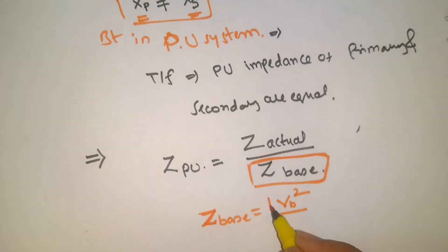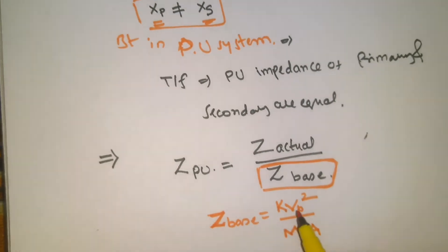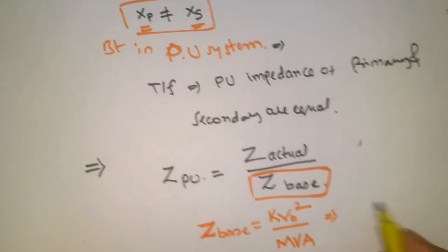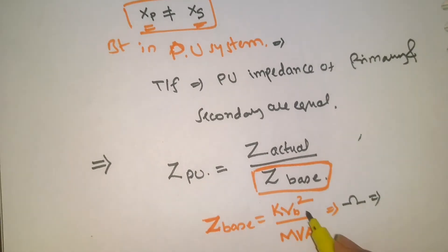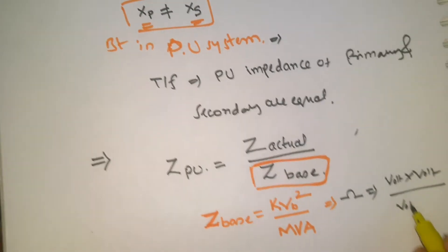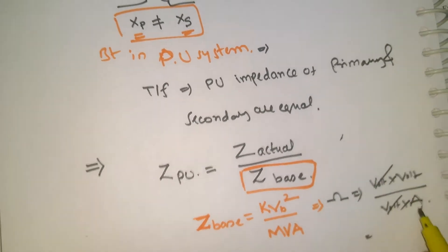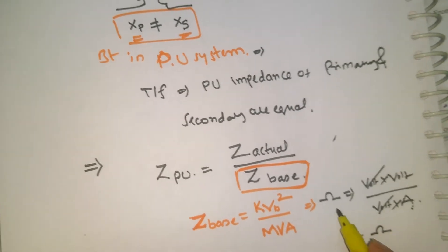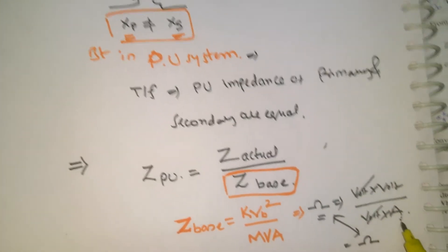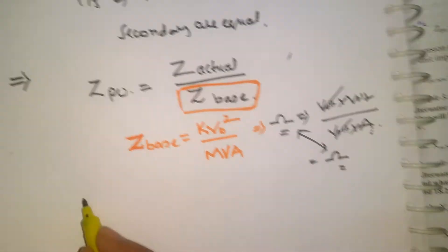If you take voltage in kilovolts, then it should be divided by MVA. I'm proving this with the formula: Z base has units of resistance. Take one volt times one volt divided by MVA — MVA is volt times ampere — so one volt divided by ampere is resistance, which is impedance. You get V times V divided by V times A, the V cancels, and you're left with resistance. This confirms Z base.